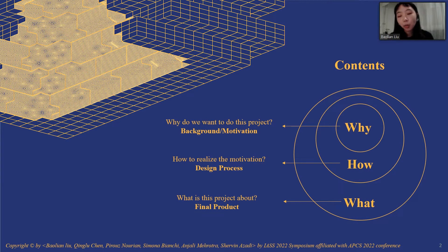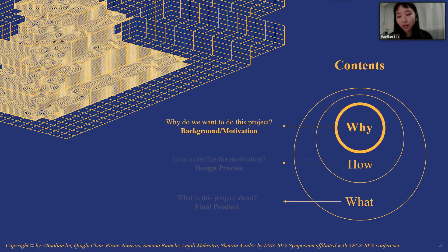The why, how, what respectively represents the three parts of our project: why we want to do this project — the background and motivation; how we realize the motivation — the design process; and lastly, what the project is about — showing the final product and results.